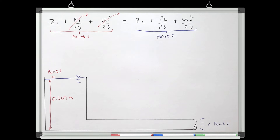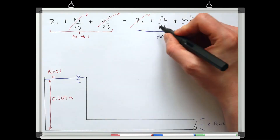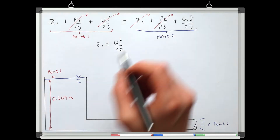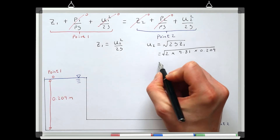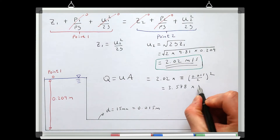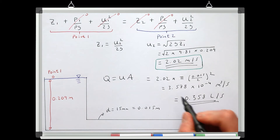At point 2 we can cancel the elevation term because the pipe is at the base of the system, and we can cancel the pressure head because the pipe is open to atmosphere, again assuming atmospheric pressure is zero. So when assuming conservation of useful energy, the total pressure head at point 1 is all potential energy as elevation, and at point 2 it's all velocity head, and we assume these are equal. Solving for velocity gives 2.02 meters per second, which corresponds to a discharge of 0.358 liters per second for a pipe with a diameter of 15 millimeters.